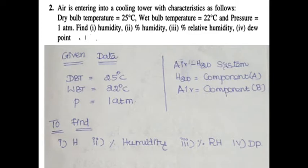Hello students, we are going to discuss psychrometric chart problems. Second problem: air is entering into a cooling tower with the following characteristics — dry bulb temperature 25 degrees Celsius, wet bulb temperature 22 degrees Celsius, and pressure 180 mmHg. Find the humidity, percentage humidity, percentage relative humidity, and dew point.